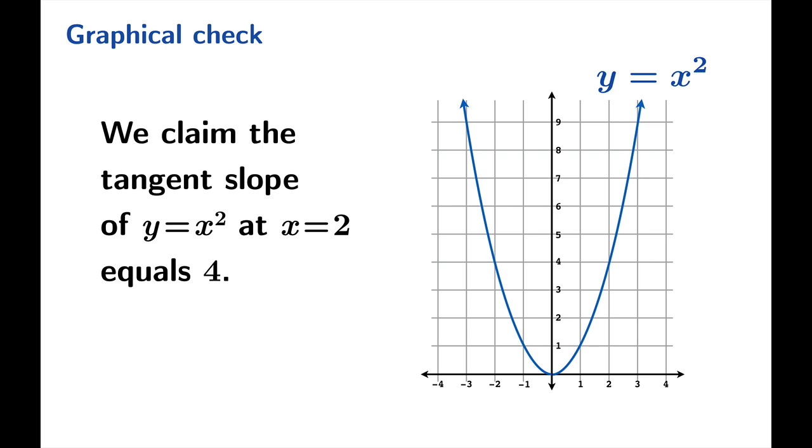Let's just do a graphical check to see if this is plausible. Here's a graph of y equals x squared, pretty much to scale. And we'll notice that at the argument 2, if we were to draw a line through that point 2 comma 4 with slope 4, it looks pretty good. It looks like it's a plausible result that the tangent slope really is 4.